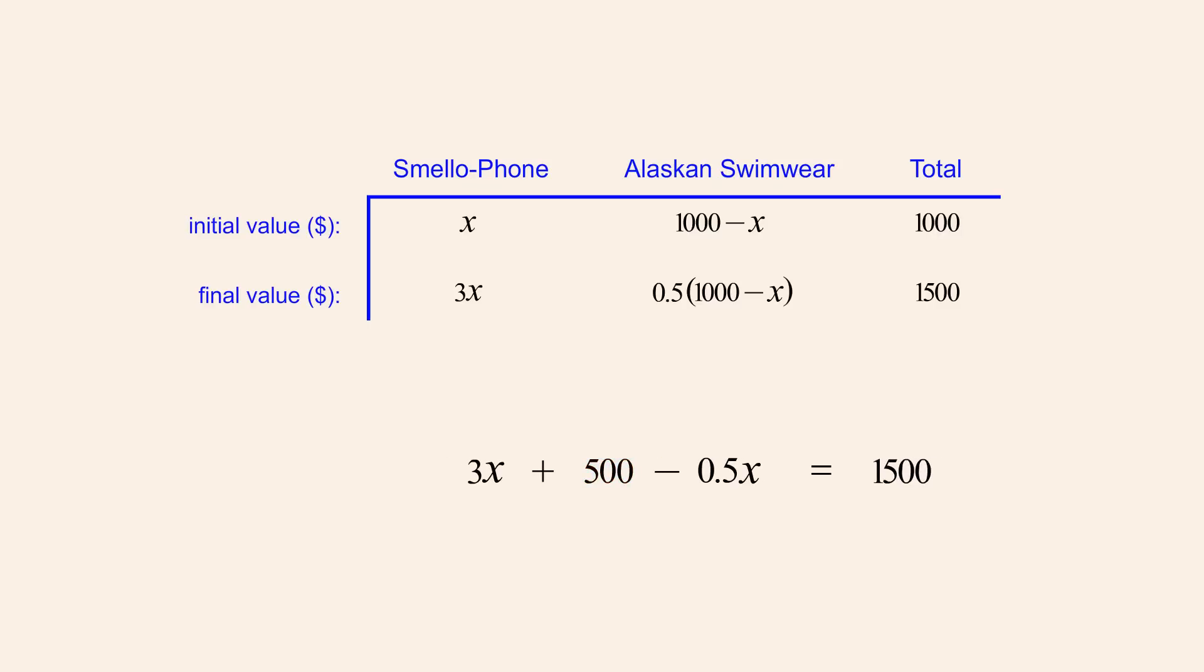To simplify further, we can combine all the terms containing x. To do this, we rearrange the equation so that all the x terms are on the left side, and the terms without x are on the right. Subtracting 500 from both sides of the equation allows us to cancel the positive and negative 500s on the left, leaving only the terms containing x. Combining these terms, 3x minus 0.5x is 2.5x. Completing the arithmetic on the right, 1500 minus 500 is 1000. The coefficient of x can then be eliminated by dividing both sides by 2.5. This allows us to cancel the 2.5s in the numerator and denominator on the left, leaving the equation x equals 1000 divided by 2.5, or x equals 400.